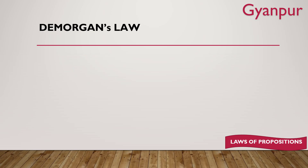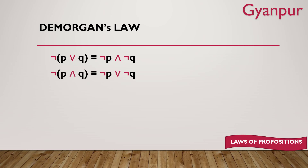Now talking about De Morgan's law — a very important and very favorite law. Whenever you have a logic statement like P OR Q and you apply negation on it — negation of (P OR Q) — you open the brackets, apply negation individually on each variable, and change the connective to the opposite. So you get ¬P AND ¬Q. This is De Morgan's law. Similarly, negation of (P AND Q) gives ¬P OR ¬Q. You apply individual negation and change the connective.